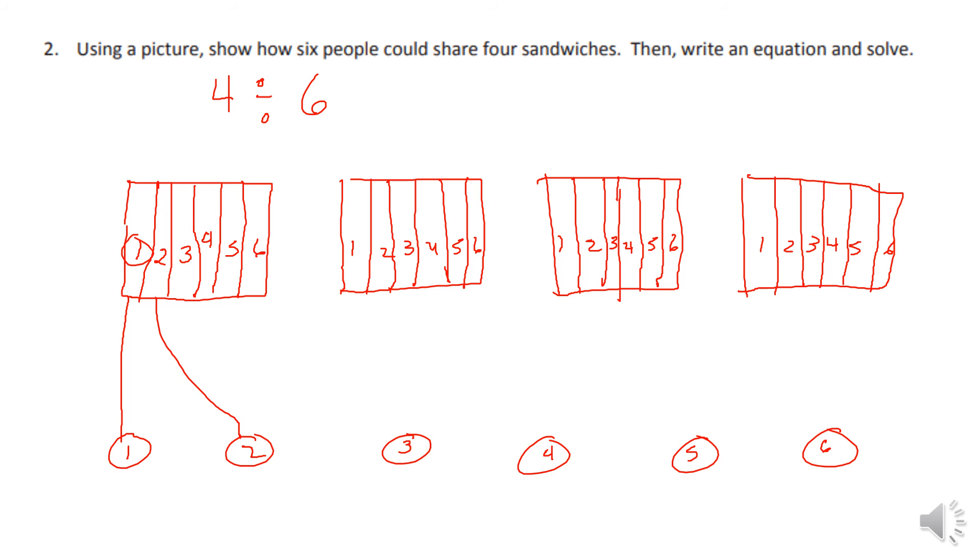So we can see this number one guy here. He got one, two, three, four. He got four sixths of the sandwiches. And two would have done the same thing, so everybody would have got four sixths of the sandwiches.